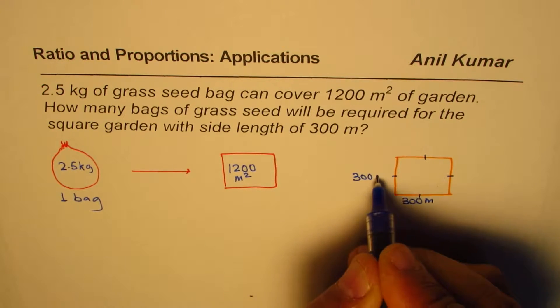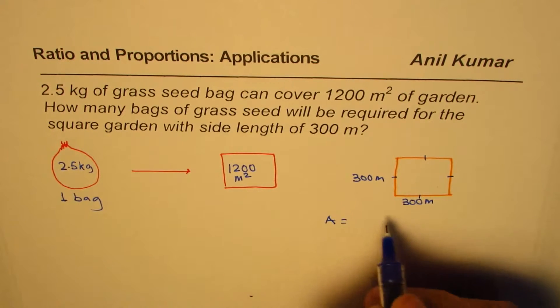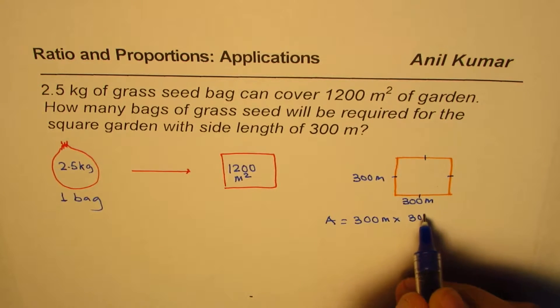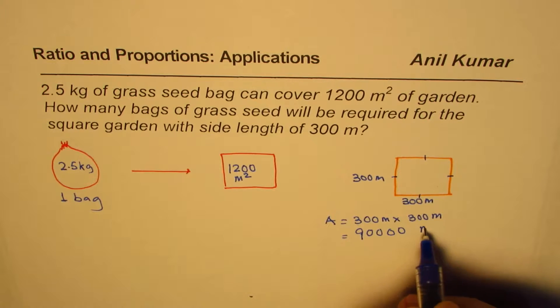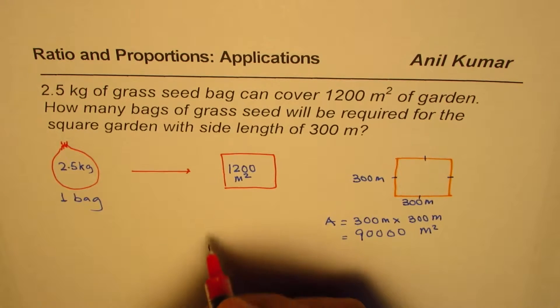So what is the area? Area is length times width, which is 300 meters times 300 meters, and that means three times three is nine, and four zeros—90,000 square meters. That's a huge amount.